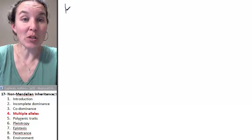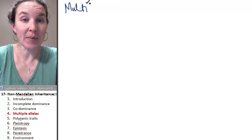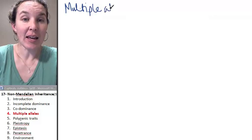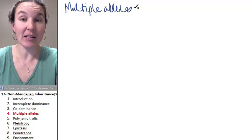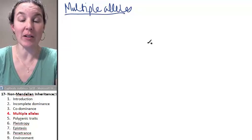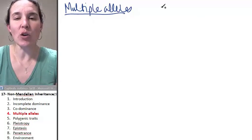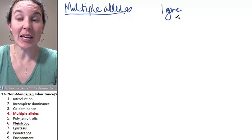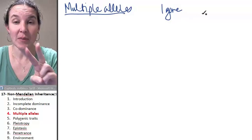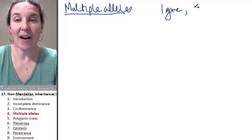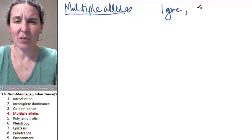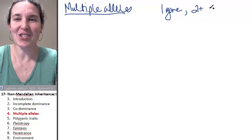Sometimes you have multiple alleles, and this can complicate different heredity patterns. What this means is that you have one gene, and we've been looking at two alleles, but you can have more than two alleles.